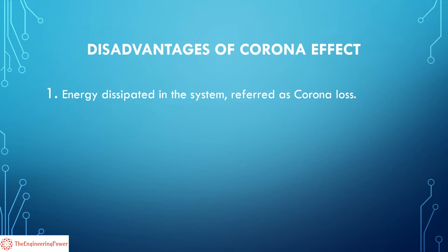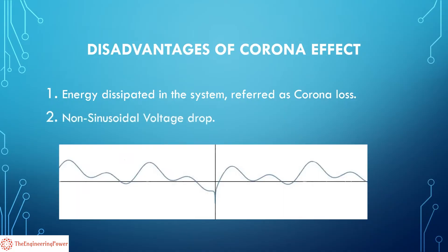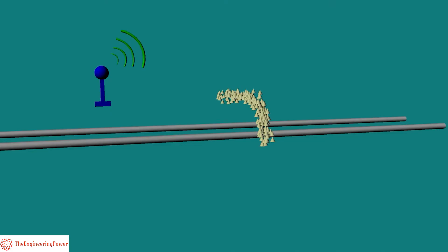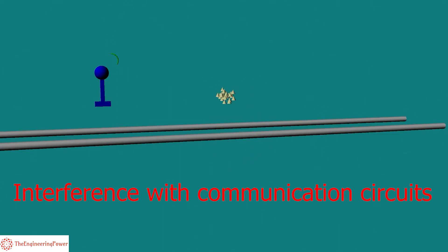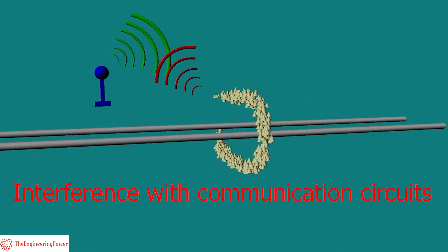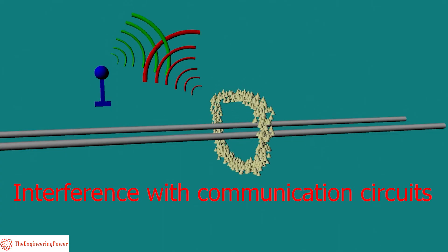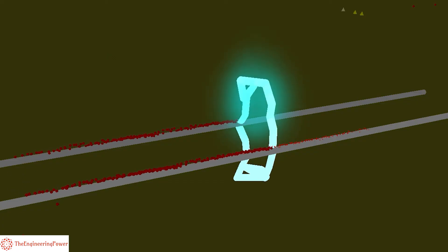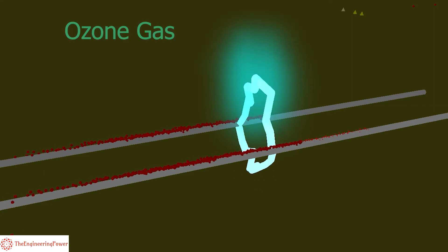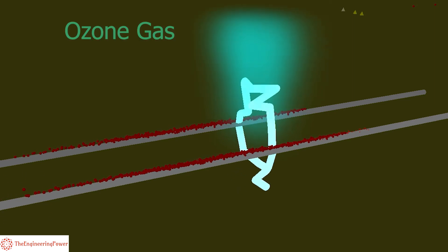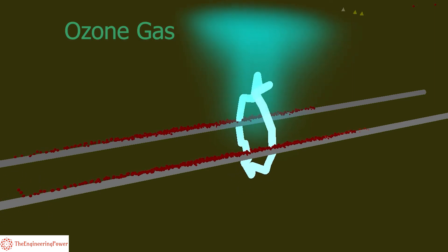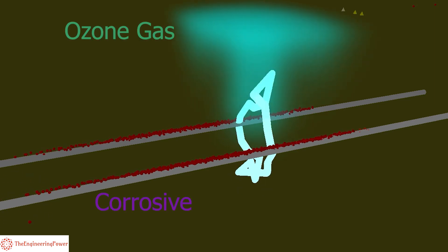A non-sinusoidal voltage drop occurs in the transmission line due to corona effect, which causes interference with neighboring communication circuits. Corona effect also results in the production of ozone gas, because of which the conductor becomes corrosive.